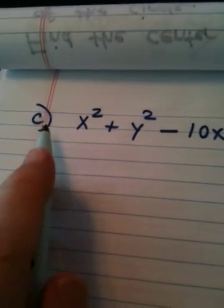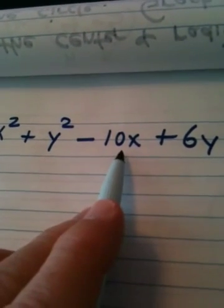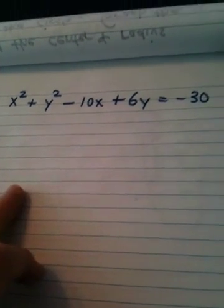Okay, ladies and gentlemen, example C. We're given the equation x squared plus y squared minus 10x plus 6y equals negative 30. And we're asked to find the center of the circle and the radius and then graph it.